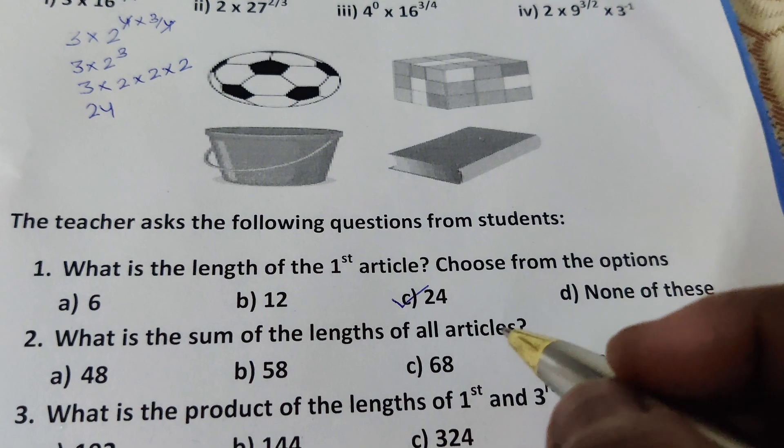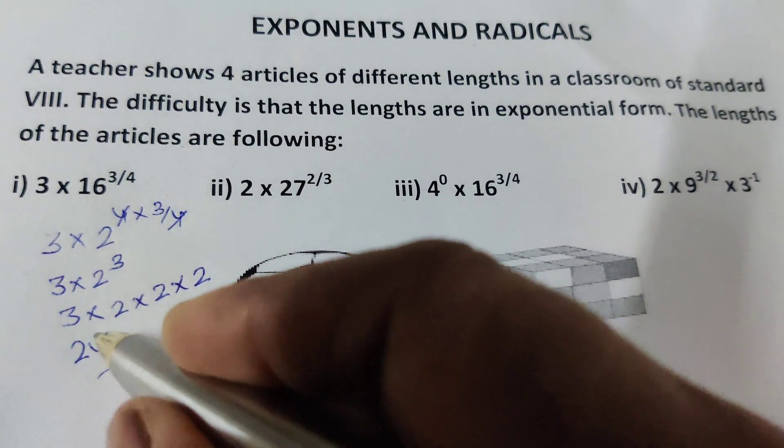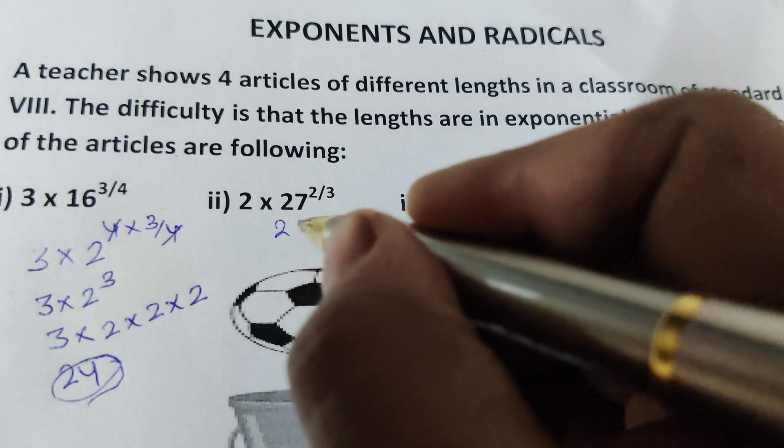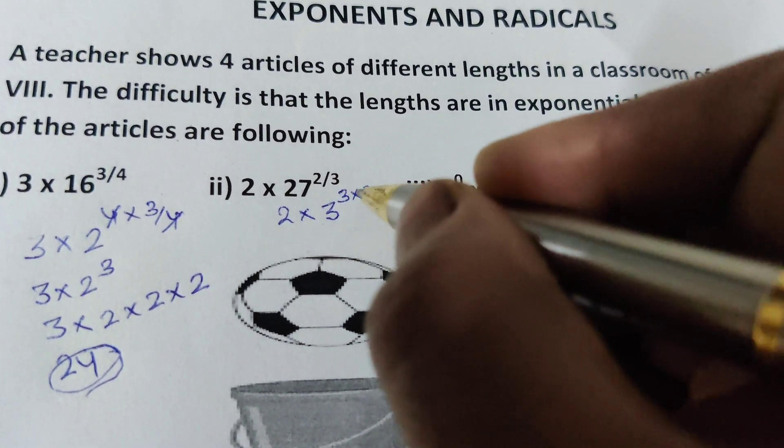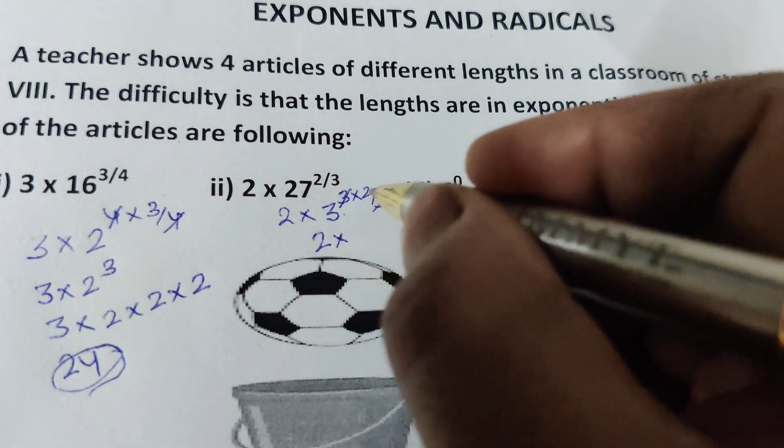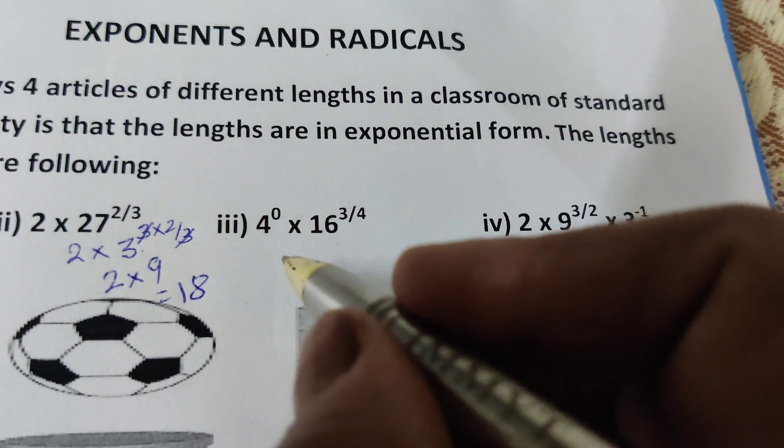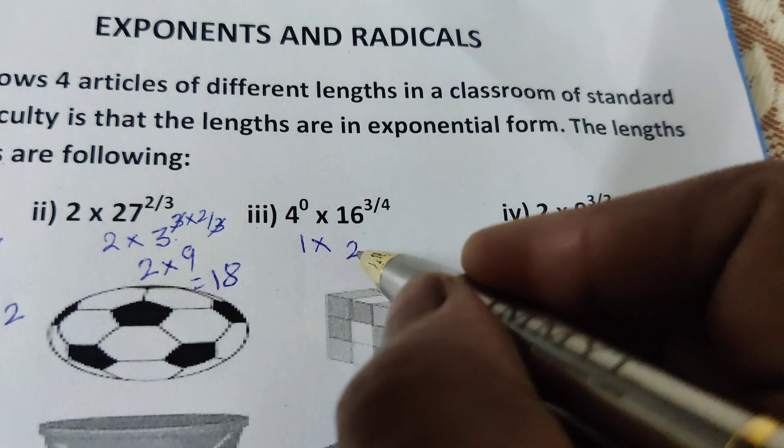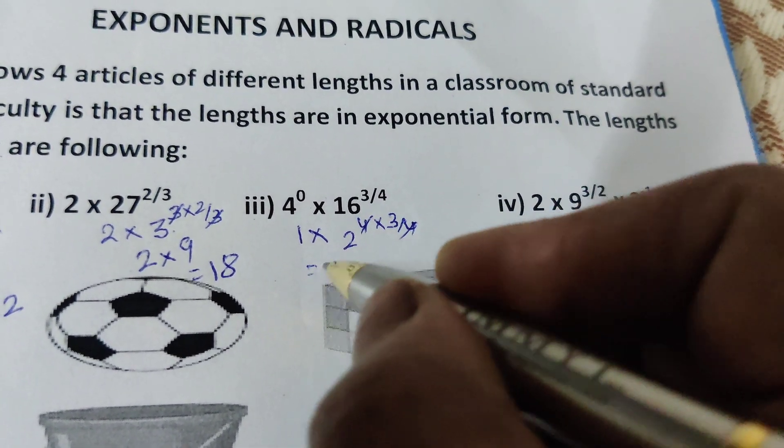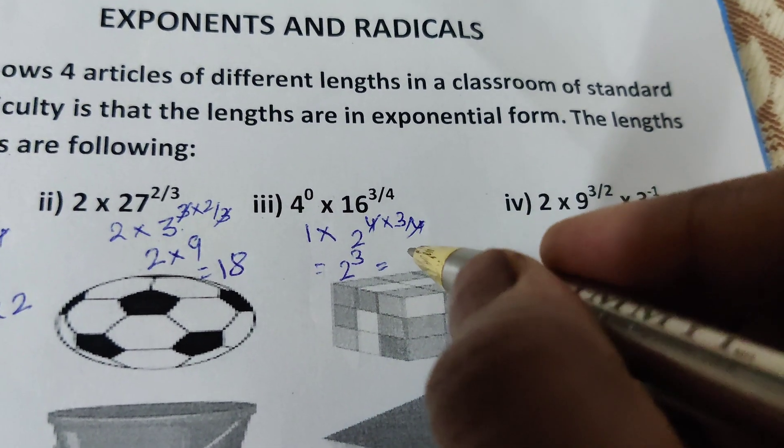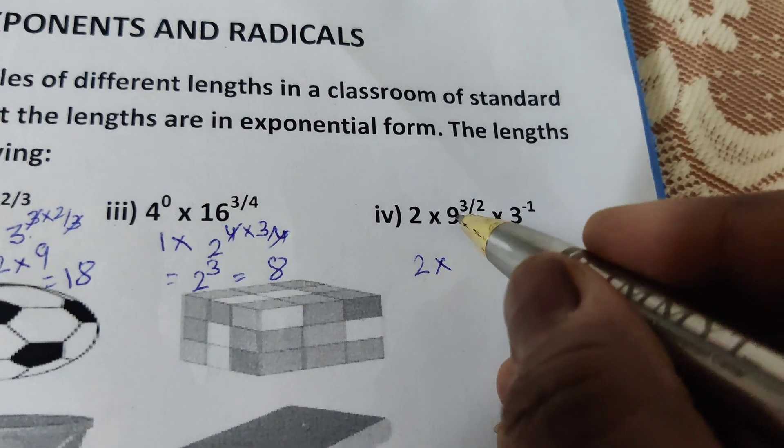Next, what is the sum of length of all articles? Now find the length of all articles. First article is 24. Now the second: 2 × 27, we can write as 3^3 × 2/3, 3 cancels, 2 × 3^2 = 9, the length is 18. Third one is 4^0 = 1, 16 as 2^4 × 3/4, which equals 2. And the length of all of these, right answer is 8.